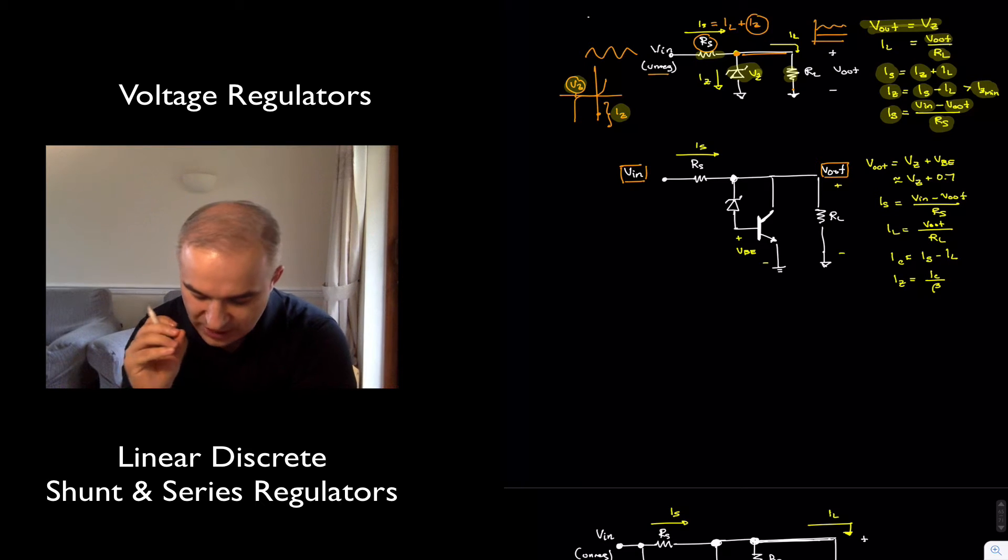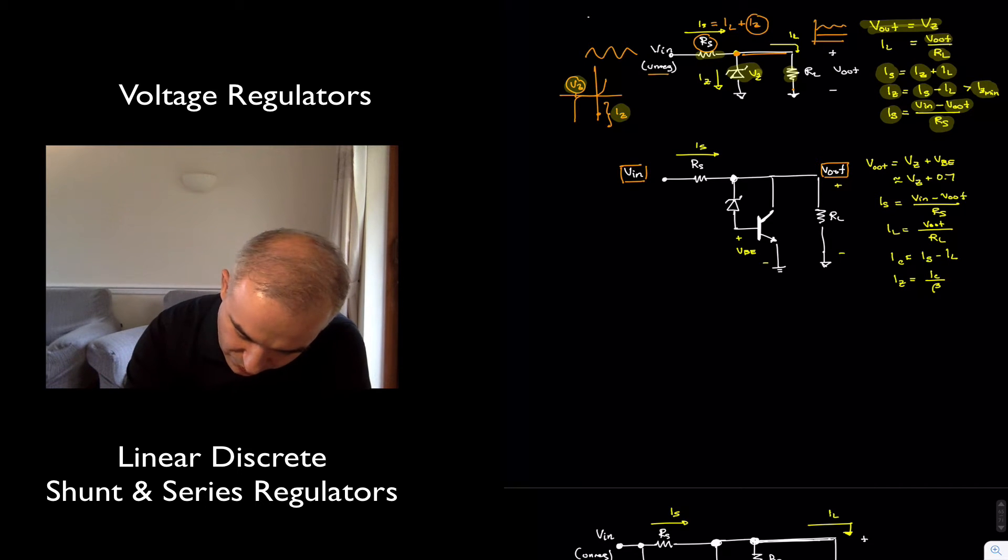And we can use the ZENER to help with that. So we are going to have a current going through our RS. In this case the current is the same as in the previous example, meaning it's going to be IS.